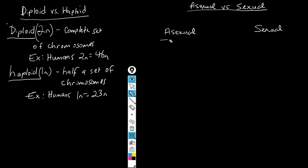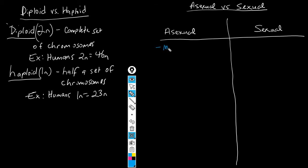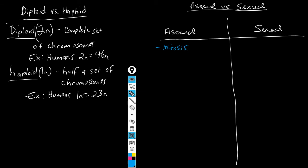This information will also help you with the Google form that you'll need to complete for your asynchronous work. We're going to use some colors to differentiate between items. For asexual, we are primarily focused on the cell division process known as mitosis. For sexual, we're focused on a similar yet different process known as meiosis.